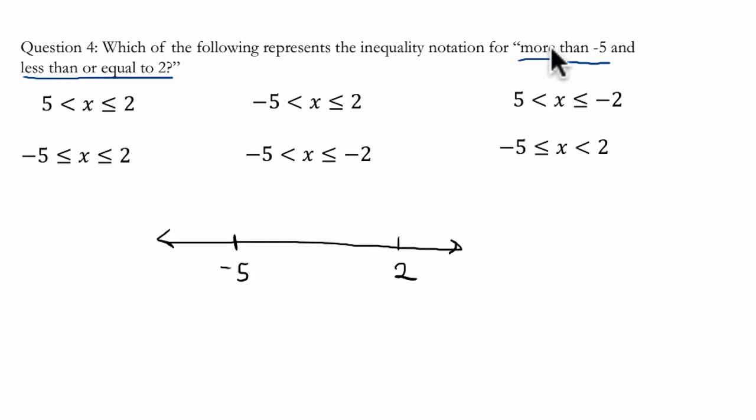It's more than negative 5, so it's going to be an open circle there, and then it goes up to 2 but can include 2.